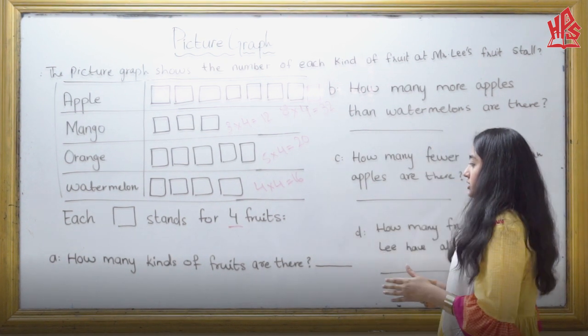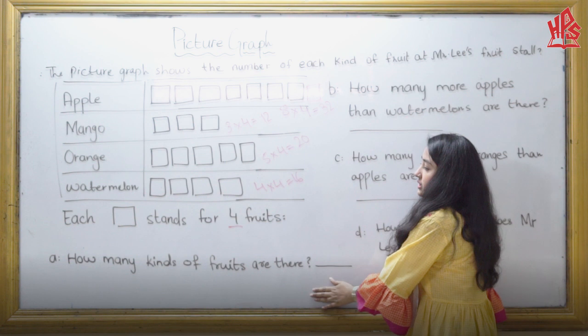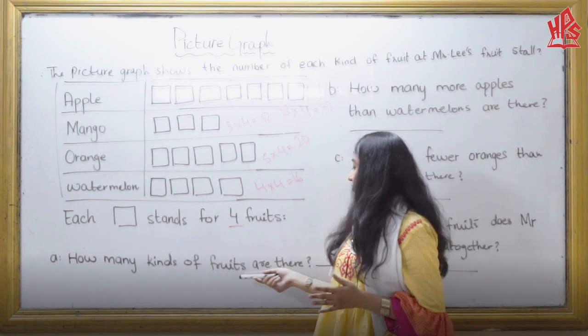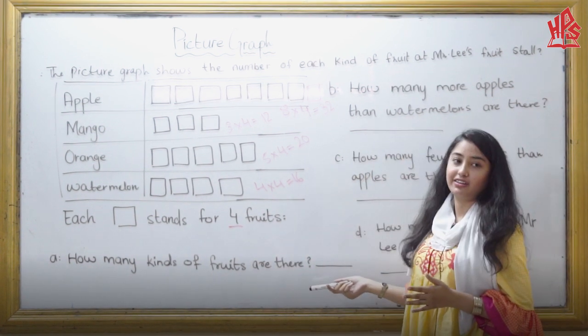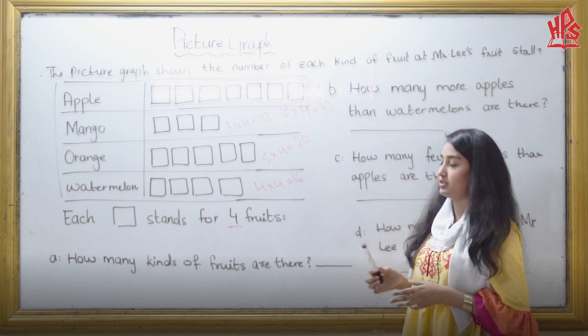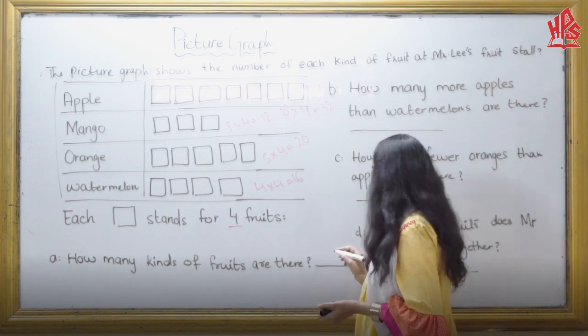Now let's come to this part. This is a very simple question: How many kinds of fruits are there? Obviously there are only 4 fruits, so we will write 4.